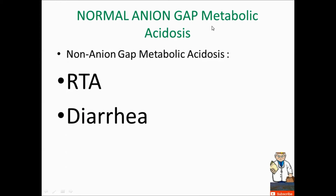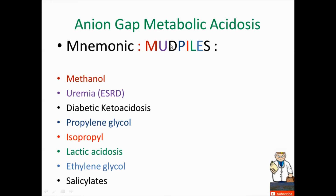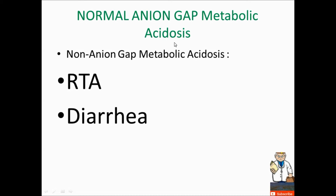Now, what are the normal anion gap metabolic acidoses? We already reviewed anion gap metabolic acidosis; now I'm focusing on normal anion gap metabolic acidosis, also called non-anion gap metabolic acidosis. There are two conditions to think about for the exam: renal tubular acidosis (RTA) and diarrhea — mnemonic RD. If the anion gap is normal, you think non-anion gap, and your differential is RTA and diarrhea.